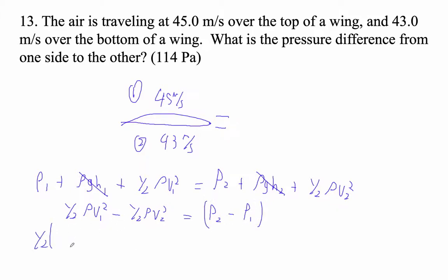So one half times, and this is air, so it's 1.29. That's on the sheet, by the way, the reference to the density of air, times 45 squared minus one half times 1.29 times 43 squared. That's going to be P2 minus P1.